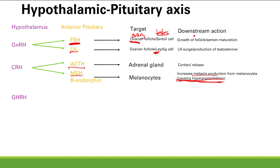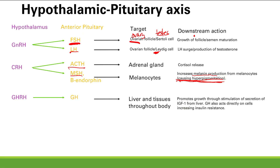Next is GHRH — growth hormone-releasing hormone — which causes growth hormone release from the anterior pituitary. Growth hormone acts on the liver and tissues throughout the body. It promotes growth through stimulation of IGF secretion from the liver, and it is IGF — insulin-like growth factor — that acts on the rest of the body. GH also directly increases insulin resistance, so too much GH can lead to diabetes alongside excess growth.